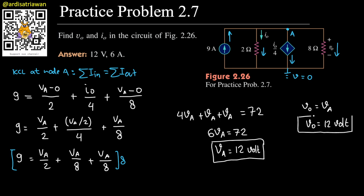And i0, i0 is just va divided by 2. va is 12, and then 12 divided by 2 will be 6 amperes. So i0 will be 6 amperes.